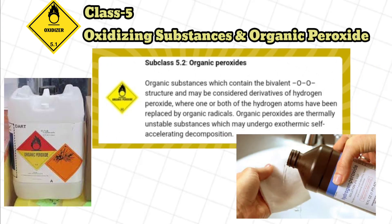Subclass 5.2, Organic peroxides: organic substances which contain the bivalent -O-O- structure and may be considered derivatives of hydrogen peroxide, where one or both of the hydrogen atoms have been replaced by organic radicals. Organic peroxides are thermally unstable substances which may undergo exothermic self-accelerating decomposition.